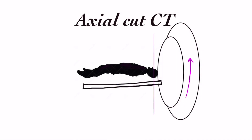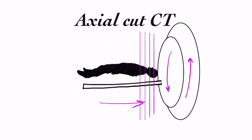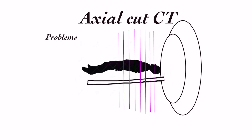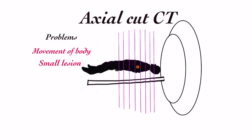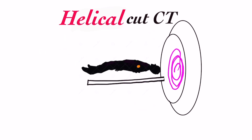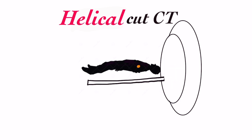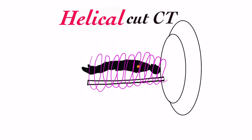In the axial method, a slice is taken with one gantry rotation; the machine moves a fixed distance and then another slice is taken, resulting in parallel slices of cross-sectional imaging. There are two problems with axial imaging: first, the body can slightly move between two slices, and second, a small tumor can lie between two slices and get missed — for example, a 5–6 mm tumor can lie between two 1 cm slices and be completely missed. Helical CT takes continuous sections while the gantry keeps rotating and the body keeps moving, resulting in faster imaging with decreased chances of any small tumor getting missed.